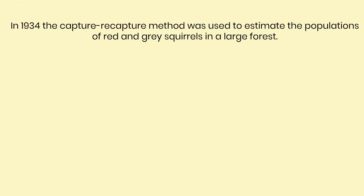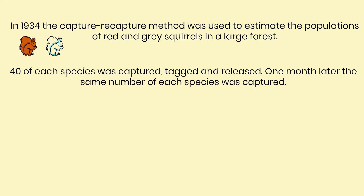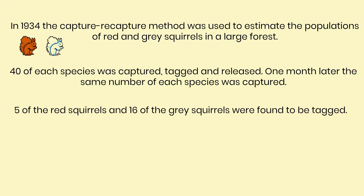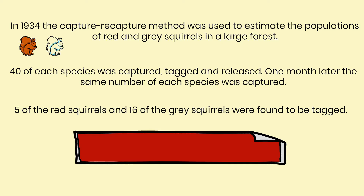The question states that in 1934, the capture-recapture method was used to estimate the populations of red and grey squirrels in a large forest in Ireland. 40 of each species was captured, tagged and released — this was the first capture. Then one month later the same number of each species was captured — that was the recapture part. Five of the red squirrels recaptured and 16 of the grey squirrels were found to be tagged.